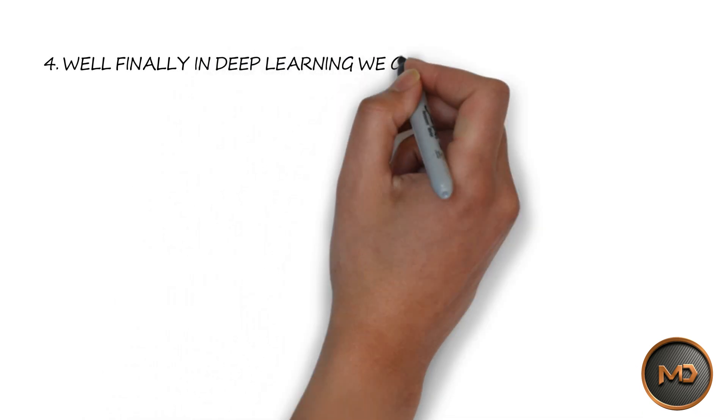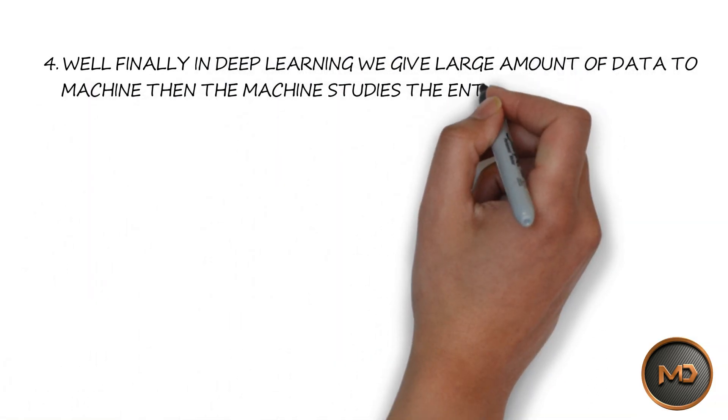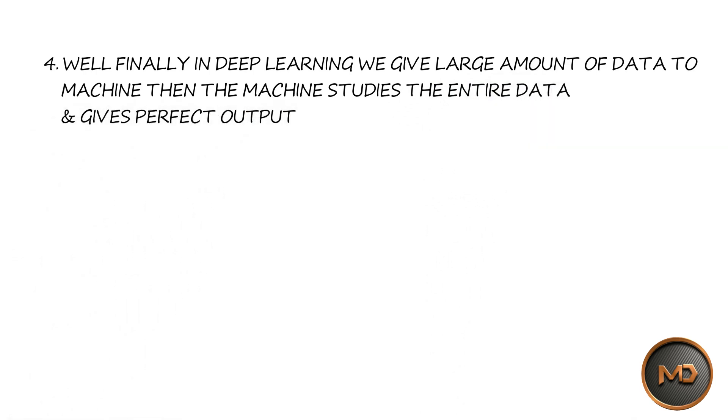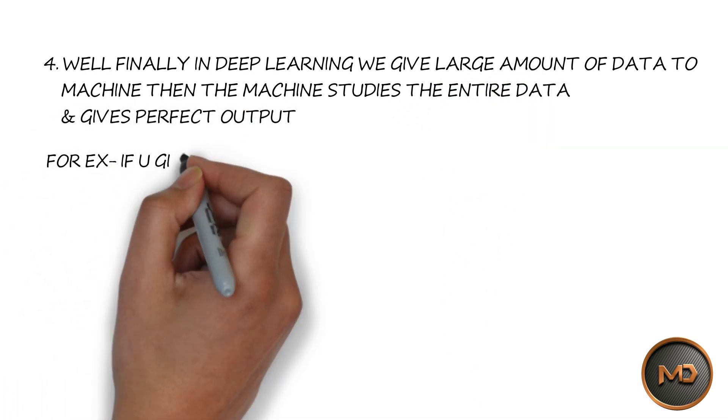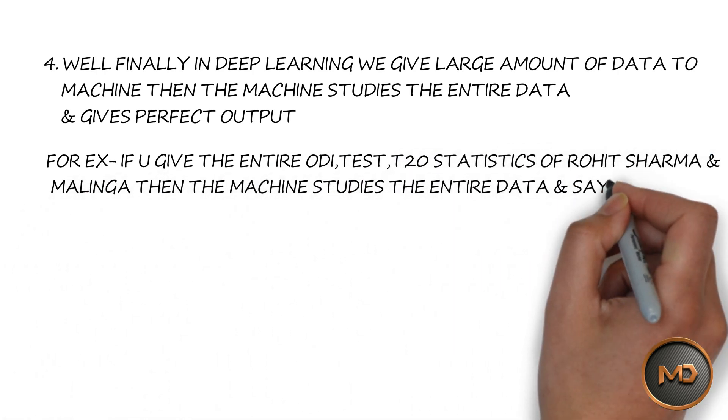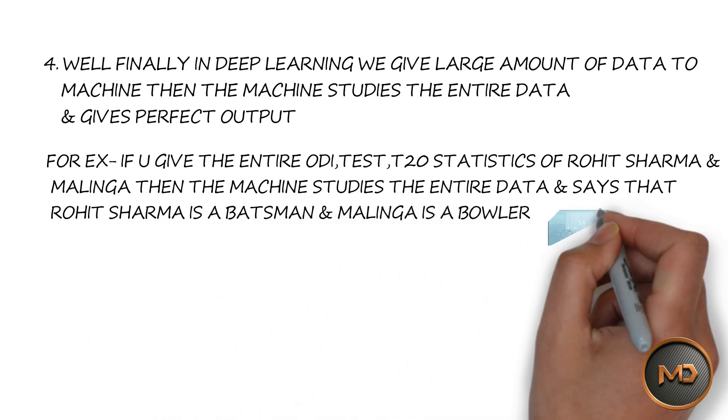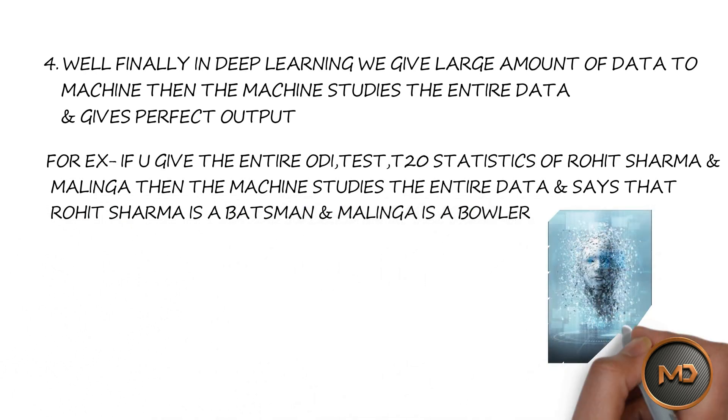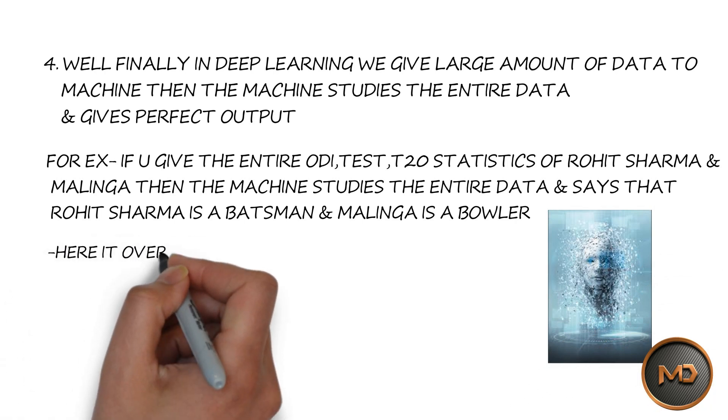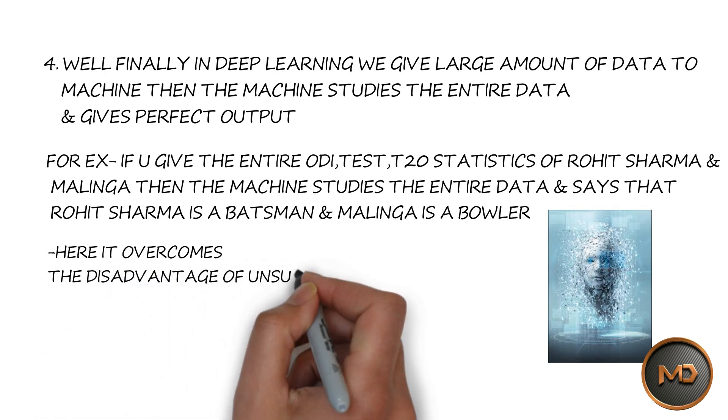In deep learning we give large amount of data to the machine. Then the machine studies the entire data and gives perfect output. For example, if you give the entire ODI, test, and T20 statistics of Rohit Sharma and Lasith Malinga, then the machine studies the entire data and says that Rohit Sharma is a batsman and Lasith Malinga is a bowler. Here it overcomes the disadvantage of unsupervised learning.